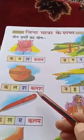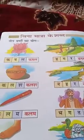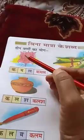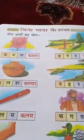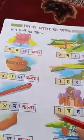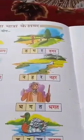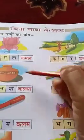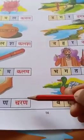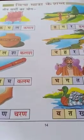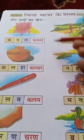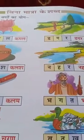Dear children, first read all the words from beginning to ending, then take your three-line notes. Words like kamal, kalash, kalam, charan — write them one by one. Make three columns in your three-line notes — column one, column two, column three — and write these words properly. Read and write.